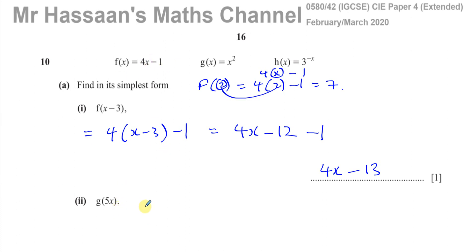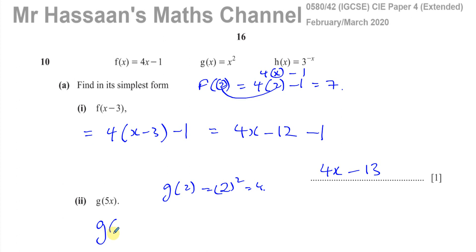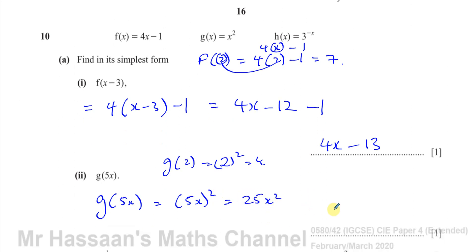Similarly with g(5x), the same kind of thing. If the question said find g(2), you'd put 2 in place of x, giving 2 squared which is 4. But the question says find g(5x), so instead of x you write 5x. So g(5x) becomes 5x all squared. Don't forget to square everything inside: 5 squared is 25, and x squared is x squared. So your answer is 25x squared.